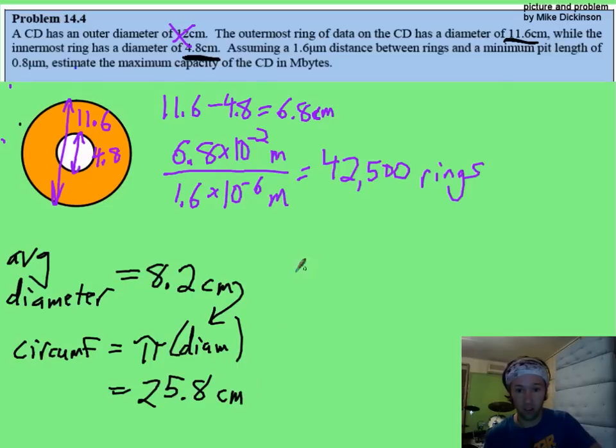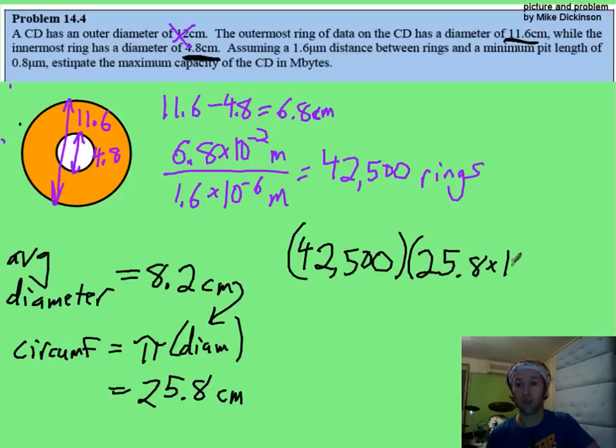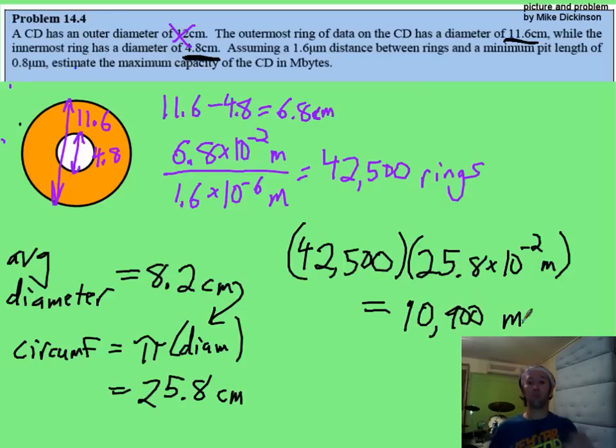And you put that in here. You're going to end up with about 25.8 centimeters as your diameter for each ring. And so then, you just take 42,500 rings times the 25.8 times 10 to the negative second meters, and you are going to get the crazy answer that you have something like 10,900 meters worth of data on that little spiral within the rings.